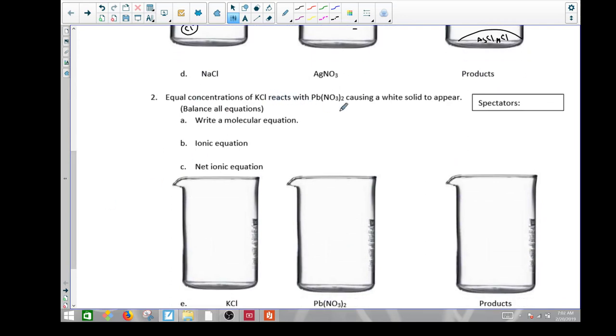Equal concentrations of KCl and lead nitrate. Molecular equation is KCl plus Pb(NO3)2 yields KNO3. Now, this 2 is because it's with the lead. This is a plus 1 and a minus 1 charge balance on the product side, plus PbCl2. Check for solubilities. This guy is aqueous. This guy is solid.